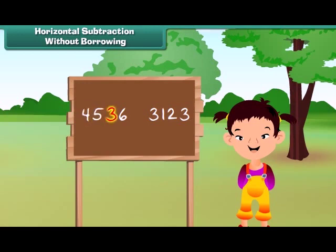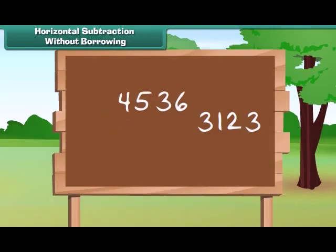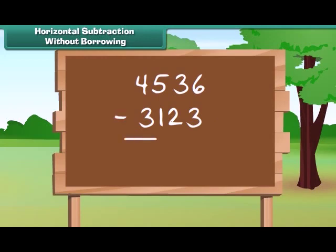Let us look at the numbers: 4536 and 3123. Her father asked her to tell the difference between the numbers. Let us help her. We write the bigger number above and smaller number below it. Now subtract the numbers at 1's place, the 10's, next 100's, and at last 1000's. Thus, the answer obtained is 1413.